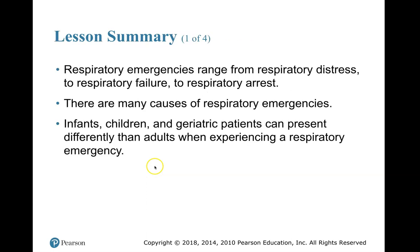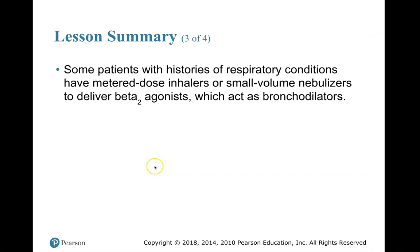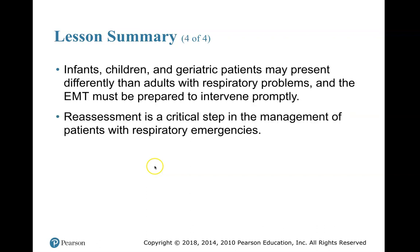Lesson summary. Respiratory emergencies range from respiratory distress to respiratory failure to respiratory arrest. There are many causes of respiratory emergencies. Infants, children, and geriatric patients can present differently than adults when experiencing a respiratory emergency. No matter the underlying cause, respiratory emergencies have many signs and symptoms in common. EMTs must know when to administer oxygen and must recognize when to provide positive pressure ventilation. Respiratory compromise is the most common cause of cardiac arrest in pediatric patients. Some patients with histories of respiratory conditions have metered-dose inhalers or small-volume nebulizers to deliver beta-2 agonists, which act as bronchodilators. Infants, children, and geriatric patients may present differently, and the EMT must be prepared to intervene promptly. Reassessment is a critical step in the management of patients with respiratory emergencies.